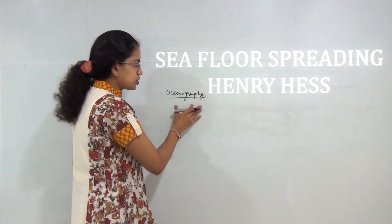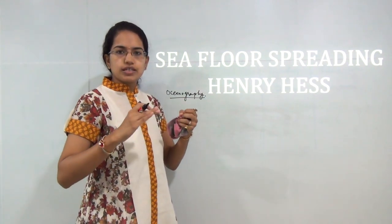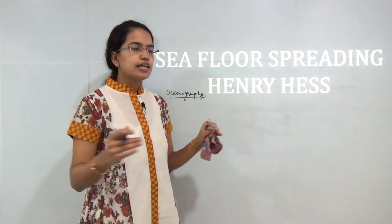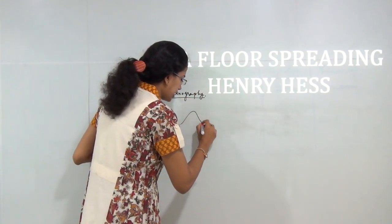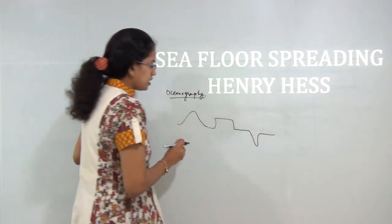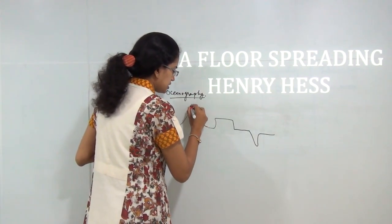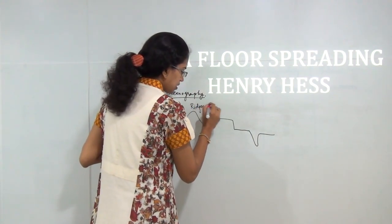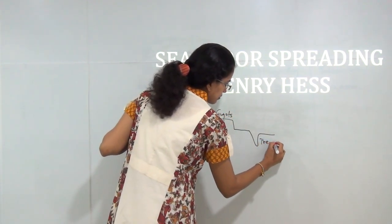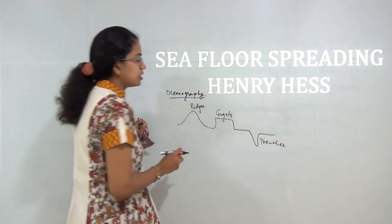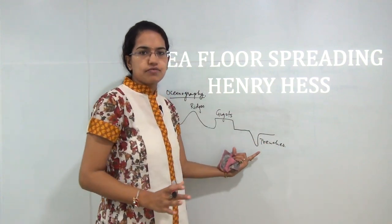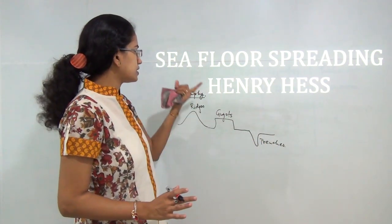When we talked about the ocean bottom relief, we try to understand that the ocean surface is similar to what we have on land — you have mountains, flat top hills, and deep trenches. These mountains are known as ocean ridges, the flat top hills are known as guyots, and the trenches are found mainly in the ocean floor. So when we talk about ocean relief, we have these three main features that we will incorporate in this class.